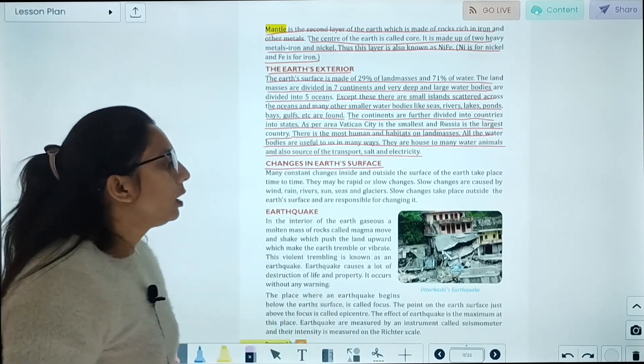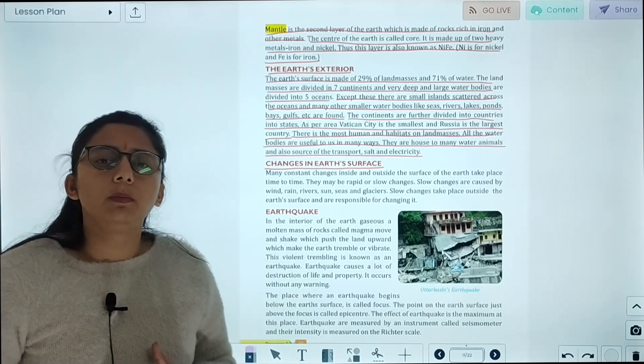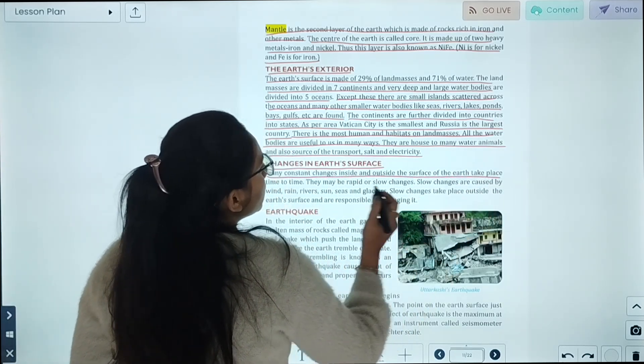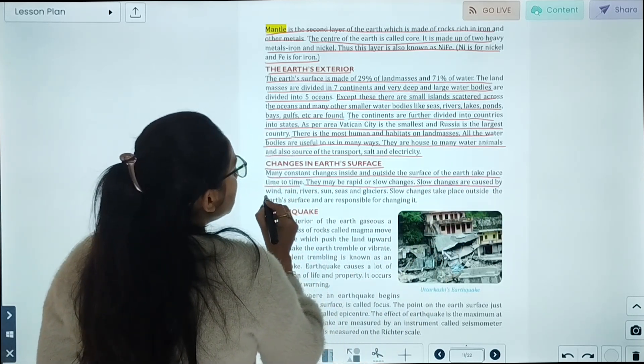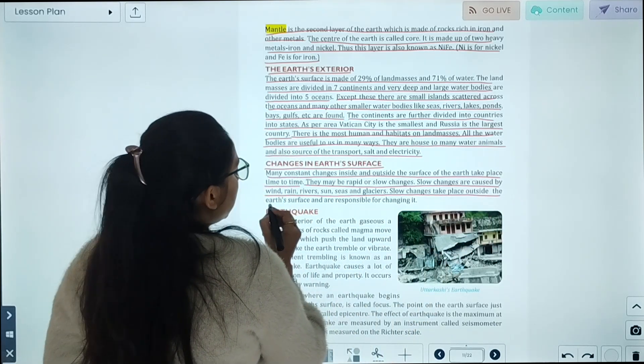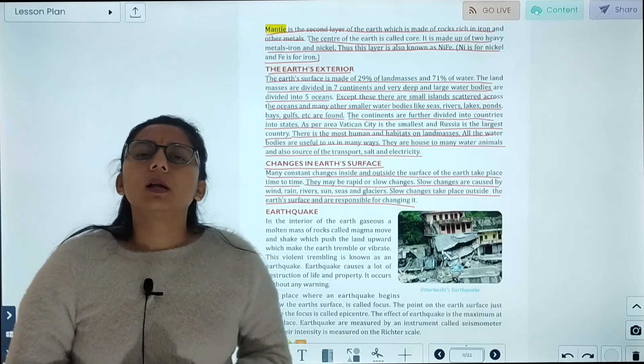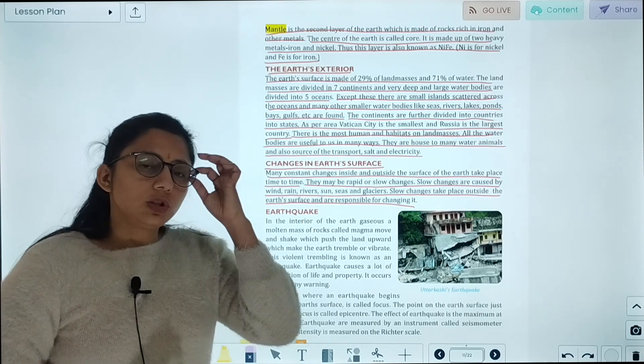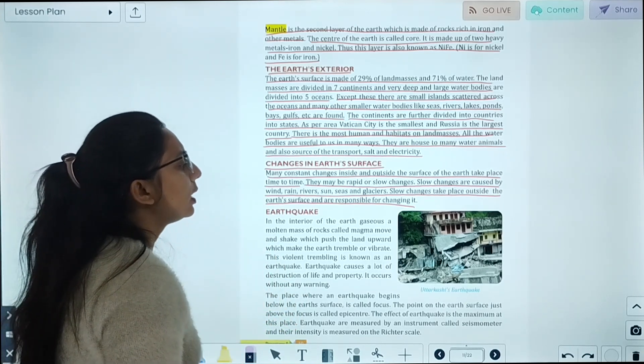Changes in earth's surface. Many constant changes inside and outside the surface of the earth take place from time to time. They may be rapid or slow changes. Slow changes are caused by wind, rain, sea, sun, and glaciers. Slow changes take place outside the surface and are responsible for changing it.